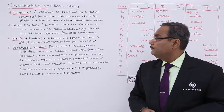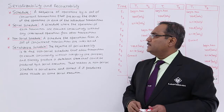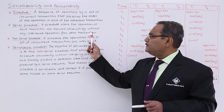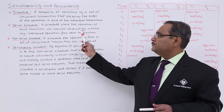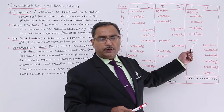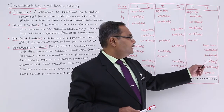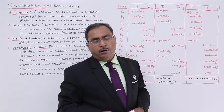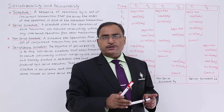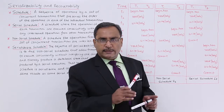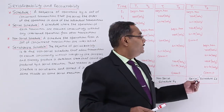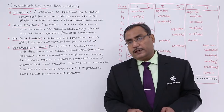Now let us go for the serial schedule. A serial schedule is one where the operations of each transaction are executed consecutively without any interleaved operations from other transactions. In the example, after completion of the total transaction T1, then the total transaction T2 gets done — there is no interleaving of any operations. That means after completion of one transaction, another transaction executes, with no overlapping of their execution spans.